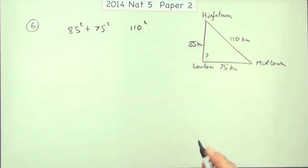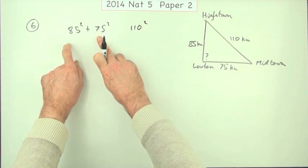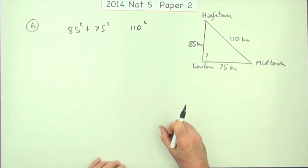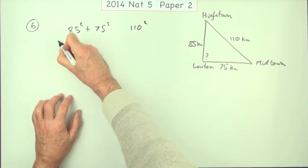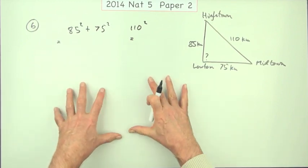The way you set it out is to say, does Pythagoras work? Is the sum of the squares of the two shorter sides the same as the square of the longer side? So you do them separately. What do they come to? What does this come to? Then you start to make your conclusions.